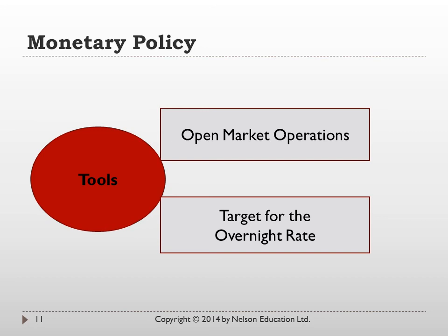Two of the tools used by the Bank of Canada in managing the money supply are open market operations and the overnight rate. Open market operations involve the Bank of Canada as a large purchaser of government securities, which are typically debt instruments of the federal government. By going to the market and buying back government securities offered for sale, the Bank of Canada can increase the money supply.